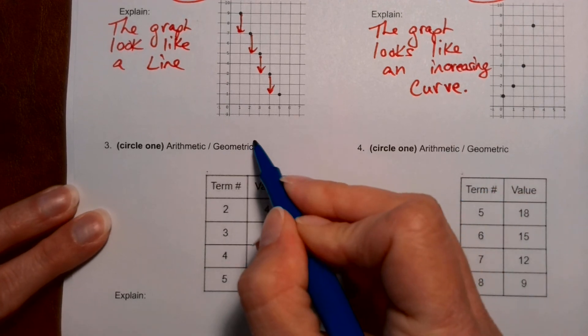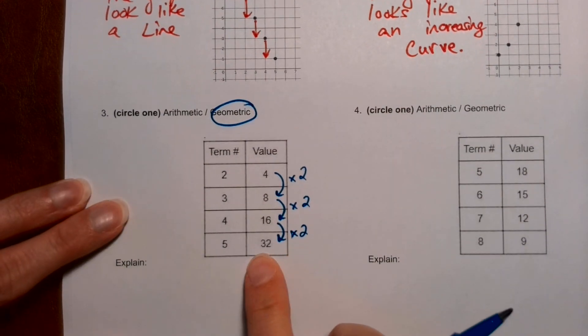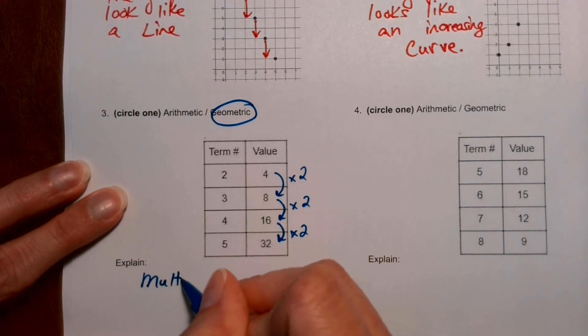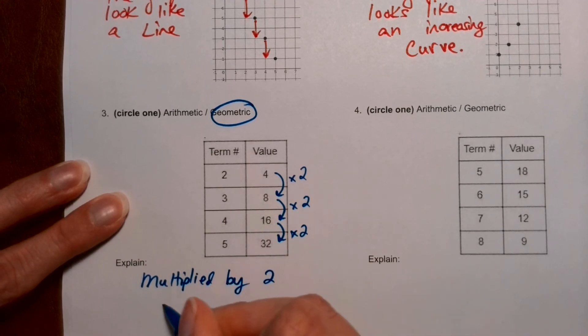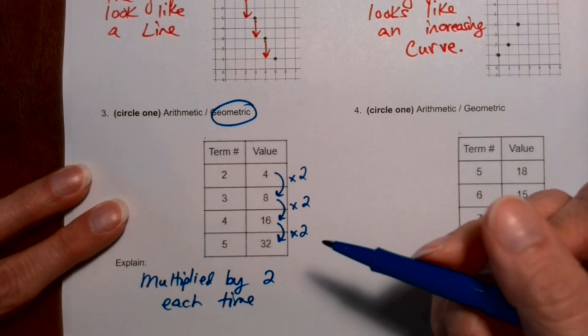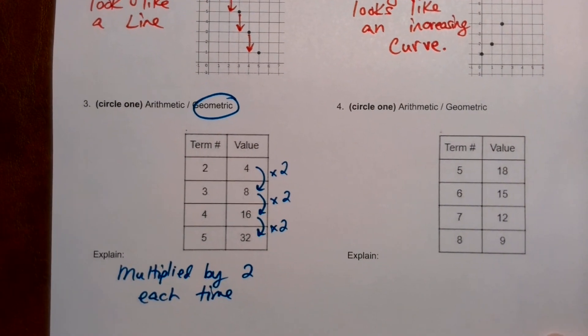Okay, so I'm going to say that this one is geometric. And the reason I'm going to pick geometric, okay, is because it's getting multiplied by two each time. Now, what I'm not allowed to say is the graph looks like a curve. This is not a graph. I don't see a curve. So I'm not allowed to say that.